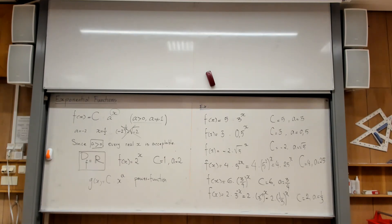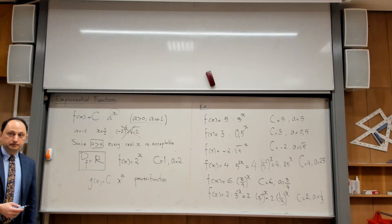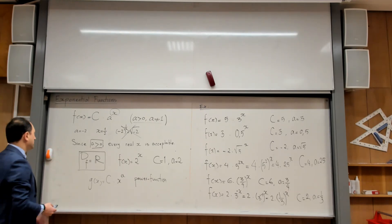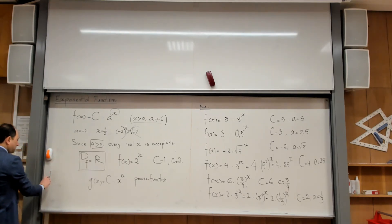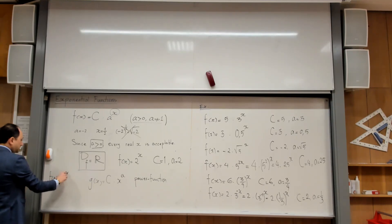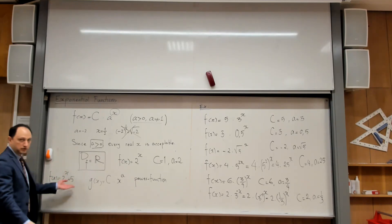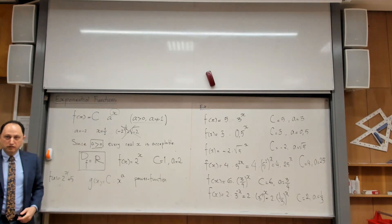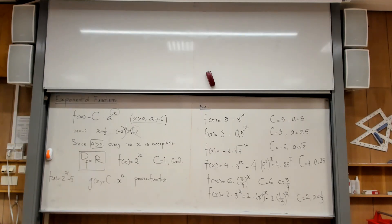Any questions? So we're not allowed to add anything to a pure exponential function — that is not a pure exponential function. Of course you can talk about a function like f of x equals 2 to the power x plus 5, but according to the definition in the book, they consider the form c times a to the power x as the definition of an exponential function.